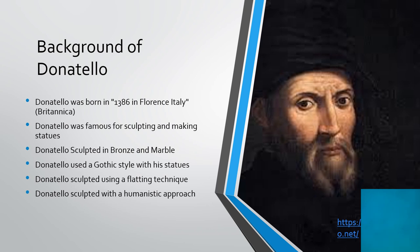Donatello was born in 1386 in Florence, Italy. Donatello was famous for sculpting and making statues. He sculpted in bronze and marble — those were the two main materials he used. Donatello used a gothic style with his statues and sculpted using a flattening technique.